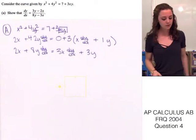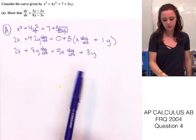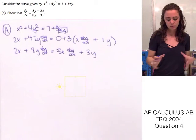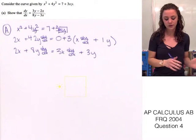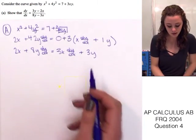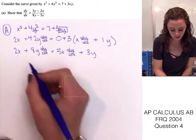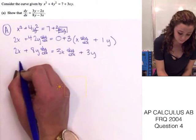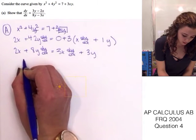Since we're solving for dy dx, we're going to want to move all of the dy dx terms onto one side and all of the terms without dy dx onto the other. So, let's move dy dx to the left and the other ones to the right. Let's subtract 3x dy dx from the right side and from the left side.